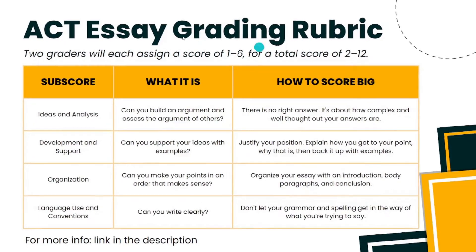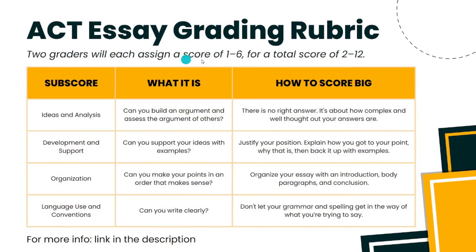The ACT essay will also have two graders, who will each assign a score of 1 to 6, for a total score of 2 to 12 for the entire essay. The idea is similar in that you are expected to write a coherent and organized essay according to the given passage. Having an introduction, body paragraphs, and conclusion matters. Having a thesis statement matters. Having logical explanations and examples with evidence matters. It isn't so much about what you answer — it's about how you answer and how you justify your answer.